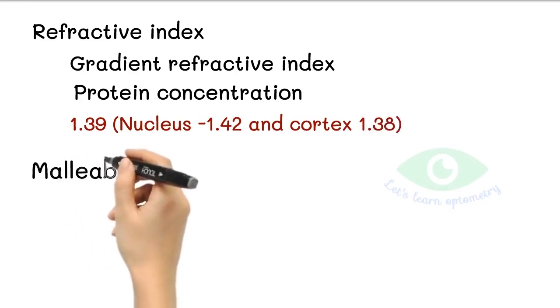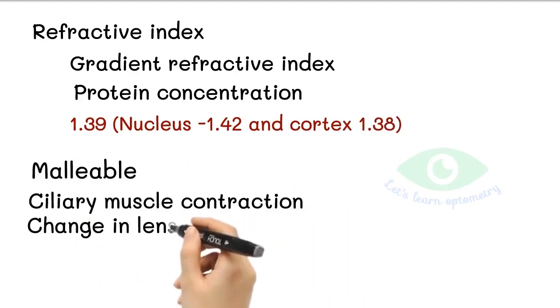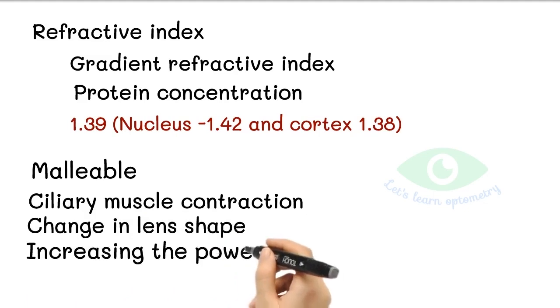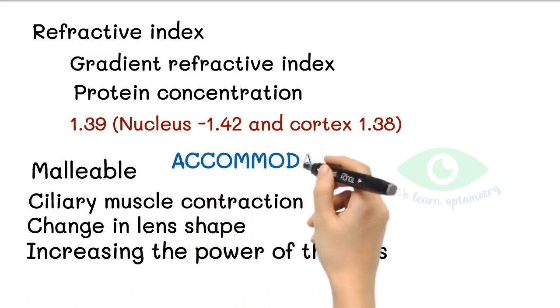The lens is malleable in nature. The ciliary muscle contraction can cause a change in lens shape, increasing the dioptric power of the eye. The mechanism that causes an increase in lens power is called accommodation, which allows the nearer objects to be focused on the retina.